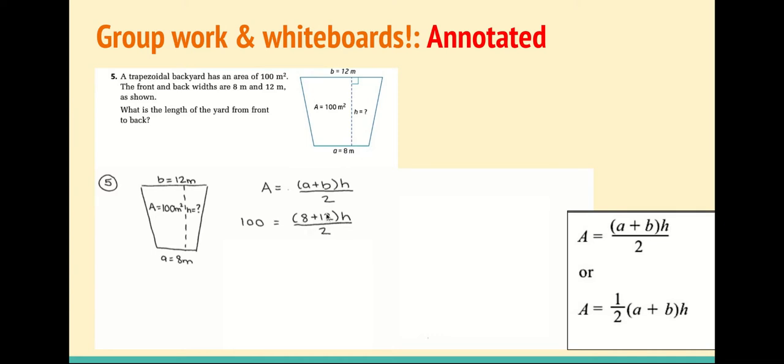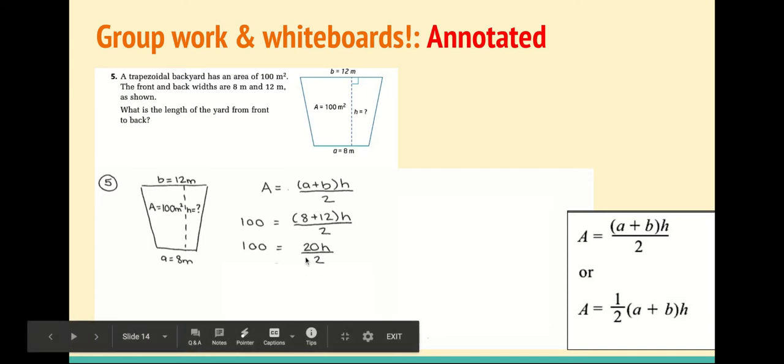I'm going to do my BEDMAS. 8 plus 12 is equal to 20, and so 100 is equal to 20H divided by 2. As a next step, you could have done one or the other. You could notice that this is actually equal to 10H.